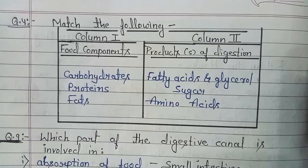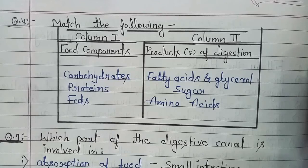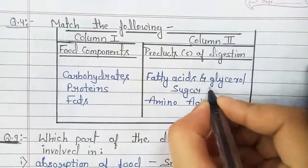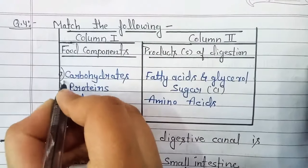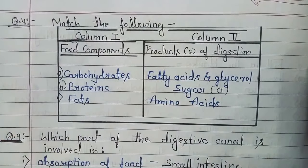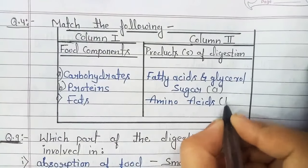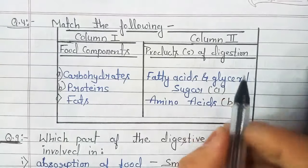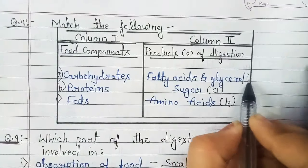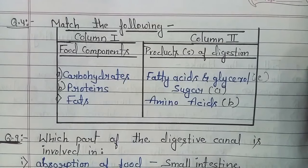Question number 4: Match the Following. You need to match both columns — products of digestion. Carbohydrates are converted into sugar. Proteins get converted into amino acids. Fat gets converted into fatty acids plus glycerol.